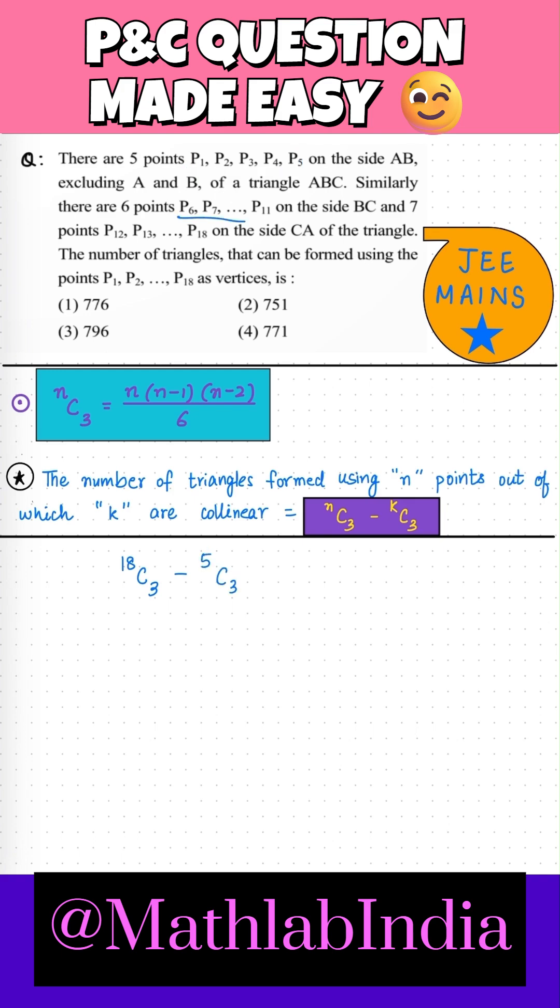So minus 5C3. Again, these 6 points P6 to P11 are on the side BC, so you have to subtract 6C3. And then these 7 points P12 to P18 on the side CA, we have to subtract them also.